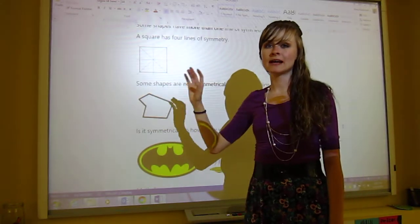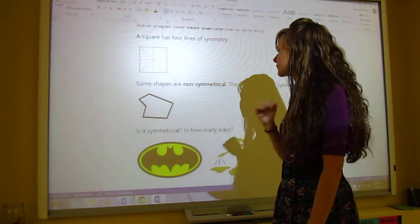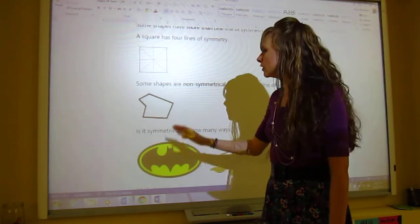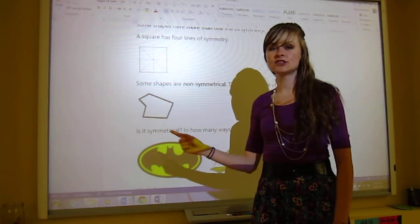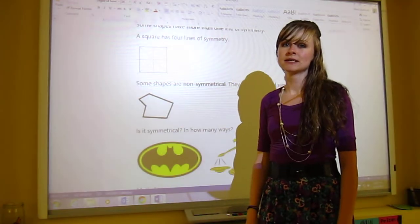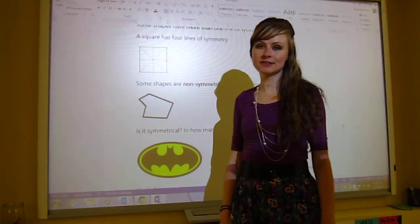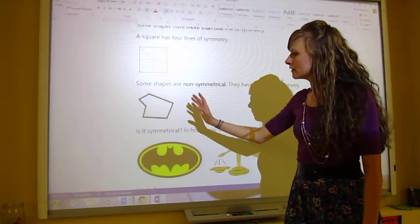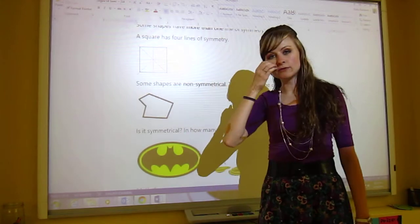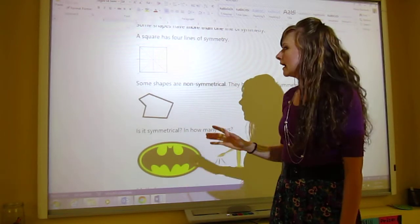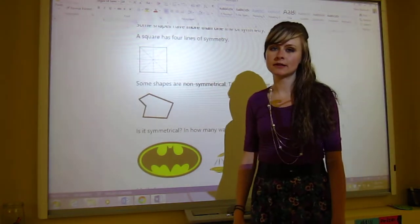Some shapes, on the other hand, have no lines of symmetry. So they are not symmetrical at all. No matter what way you fold it, this shape will never be symmetrical. There's not much more to say about it. Sometimes you have to try and just look a few ways to make sure. But there are those shapes that are not symmetrical.